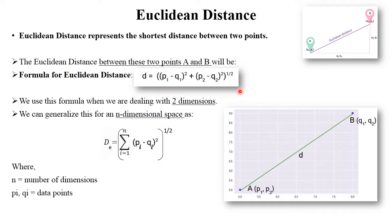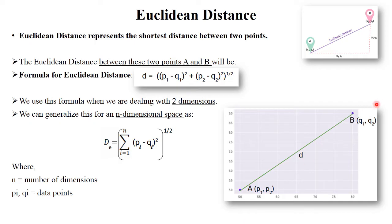Euclidean distance — this model is generally used to represent the shortest distance between two points. See here in this diagram: suppose this is point A and this is point B, and you have to calculate the shortest distance between these two points. Point A has x and y axis coordinates P1 and P2, and point B has coordinates Q1 and Q2.